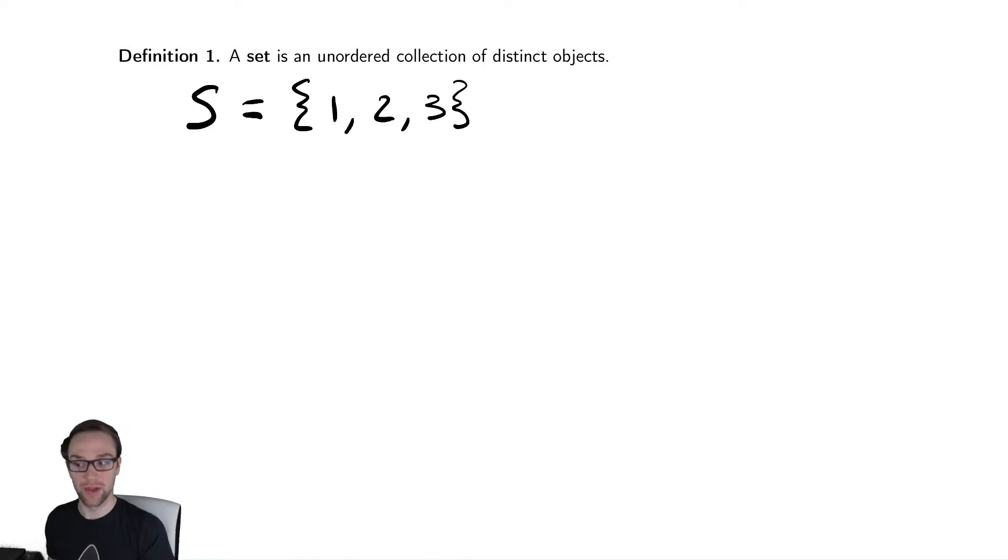It says unordered though. So this set is the exact same as the set 2, 3, 1, which is the exact same as the set 3, 2, 1, or any other permutation of those elements. It doesn't matter what the order is. All that matters is what elements are in the set. That is the important thing to keep track of.